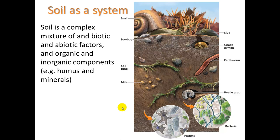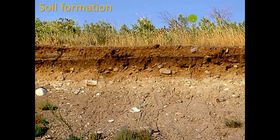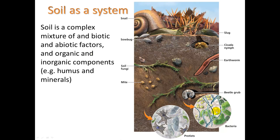Soil is a complex system. It is a complex mixture of biotic and abiotic factors, and organic and inorganic components. Humus refers to the organic components that will break down, mostly made up of hydrocarbons. Inorganic compounds meaning minerals — things like nitrates and phosphates. Bacteria is an important component of soil, as are protists, which are single-cellular organisms. We also see a variety of insects, earthworms, and fungi as important components of the soil.